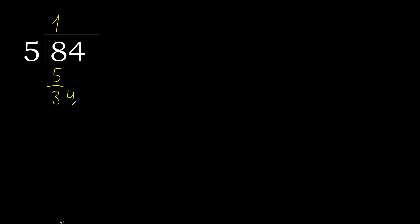Next: bring down to get 34. 5 multiplied by 7 is 35 — that's greater. 5 multiplied by 6 is 30 — not greater. 34 minus 30 is 4.